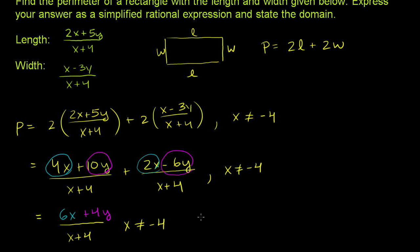You could factor out a 2 here if you want. Not clear which one is more simplified. I'd argue that this one is. But you could write this as 2 times (3x plus 2y), just factoring out a 2, over (x plus 4), where once again, x cannot be equal to negative 4.